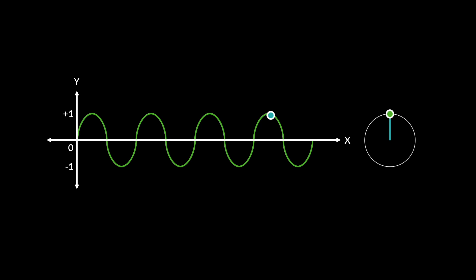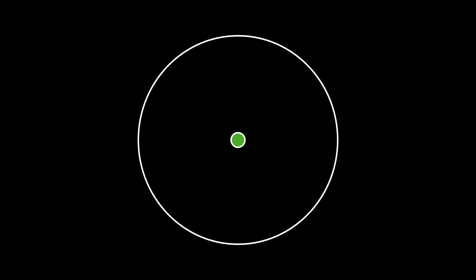The amplitude of this wave coincides with the radius of the circle. But how is this point moving around a circle linked to the sine and cosine functions? Let's atomize this together to understand the fundamentals behind these concepts.